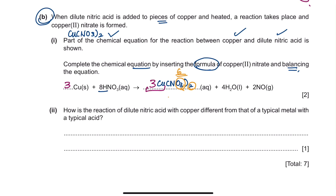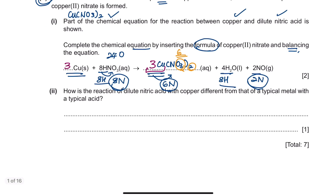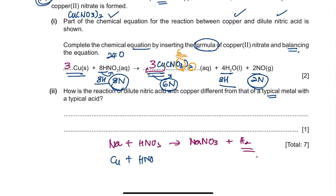Checking the balance: 8 H on each side, 8 nitrogen on each side (2 + 6 = 8), and 3 copper on each side. The equation is balanced. The final answer is putting 3 in front of copper and 3 in front of copper nitrate. For the last question — how is copper's reaction with dilute nitric acid different from a typical metal? A typical metal like sodium produces sodium nitrate and hydrogen gas, whereas copper reacting with nitric acid produces water and nitrogen oxide instead of hydrogen gas.